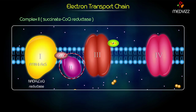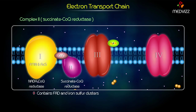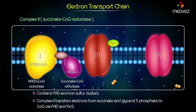Complex 2 is succinate coenzyme Q reductase. It also contains FAD and iron-sulfur clusters. Complex 2 transfers electrons from succinate and glycerol-3-phosphate to coenzyme Q via FAD and iron-sulfur cluster.